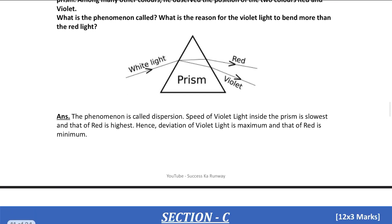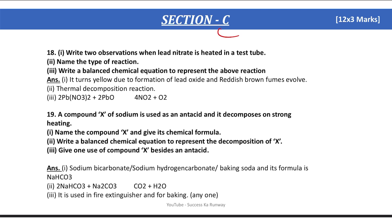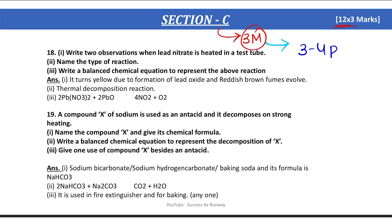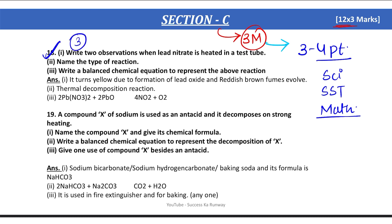The next section is Section C. Section C carries 3 marks per question. For a 3-mark question, you don't need to write too many points — just 3 to 4 points is enough, whether it is Science, SST, or Math. For example, question number 18 asked in 3 marks may have a paragraph part worth 1 mark, then another part worth 1 mark, and a final part worth 1 mark — totalling 3 marks. The paper is not tough; it is very easy and simple.